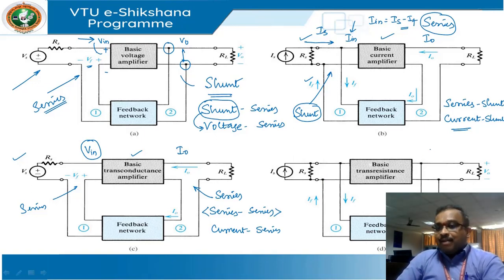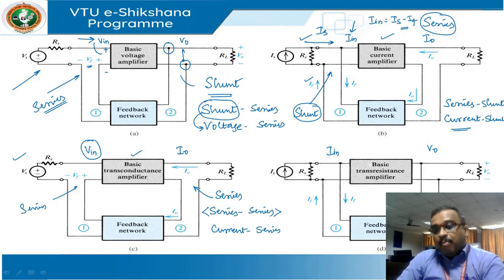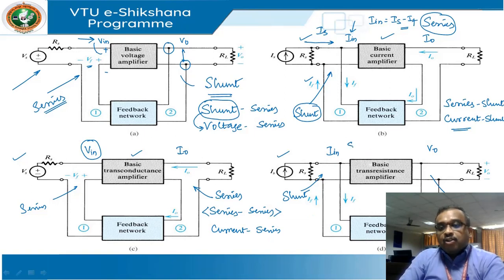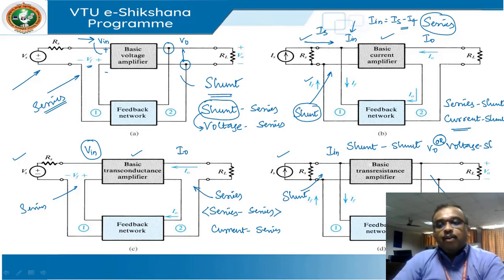Block diagram D is a trans-resistance amplifier with voltage at the output and current at the input. The output voltage is sampled in shunt, and since the source is a current source, the feedback is also connected in shunt. Both are shunt, so this is a shunt-shunt feedback amplifier, also equivalent to a voltage-shunt feedback amplifier.